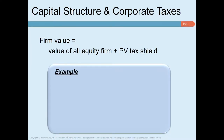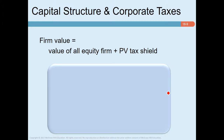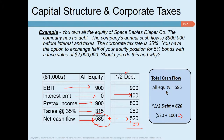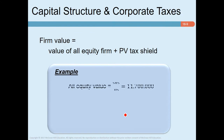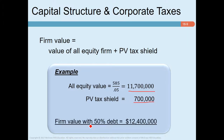The value of the firm equals the value of the all-equity firm plus the present value of the tax shield. The all-equity firm's annual cash flow of 585,000 divided by the discount rate gives its value of 11.7 million. If the firm uses 50 percent debt, the present value of the tax shield adds 700,000, increasing total firm value to 12.4 million. The tax shield functions as an additional asset that raises firm value when debt is used.